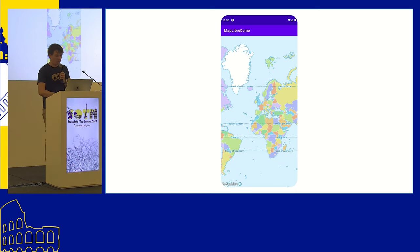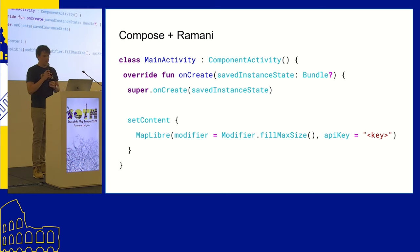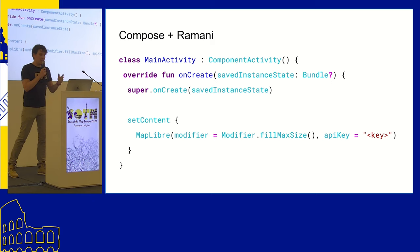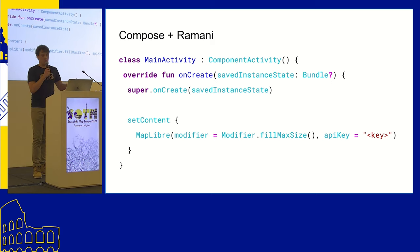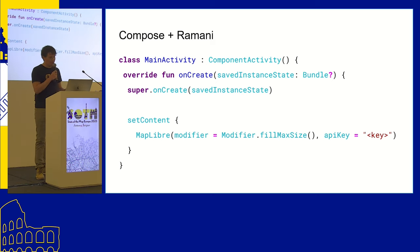Just to show how it looks with Compose and Ramani — that's just this. It's basically just one line: MapLibre, and you give it some properties. Just this will show you the interactive map. I argue that it's much simpler — I think we would all agree on that.